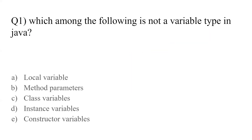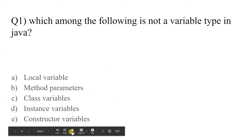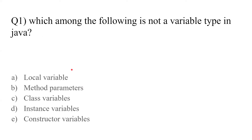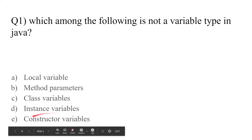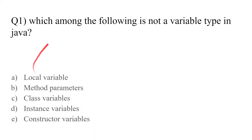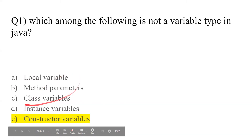Question number one: which among the following is not a variable type in Java? We have five options: local variable, method parameters, class variables, instance variables, and constructor variables. Method parameters are those variables declared during writing a method — for example, int sum(int a, int b). The answer is option E, constructor variables. Always remember: A, B, C, D are the four types of variables we define in Java.